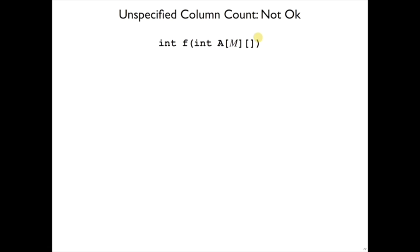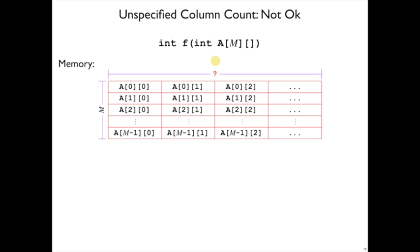On the other hand it's not okay to leave off the columns count here because if we did, given the way arrays are laid out, this first row would go some unknown number of columns and then the second row would start. And if we try to do the column calculation, or the array index calculation, then we won't know to get from this place to this place how many columns we should skip over.